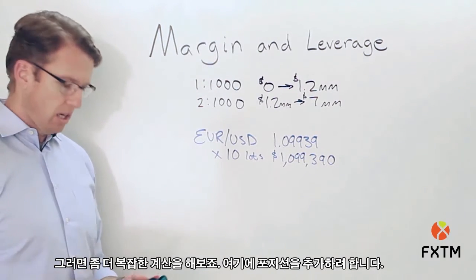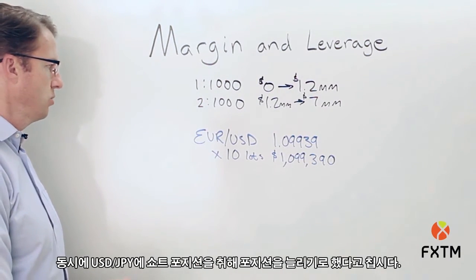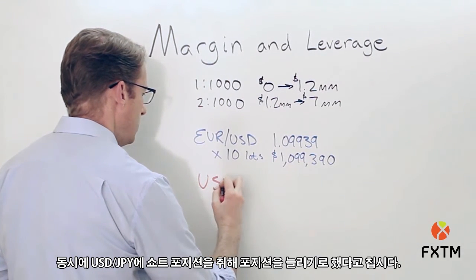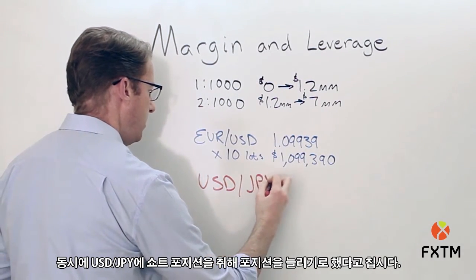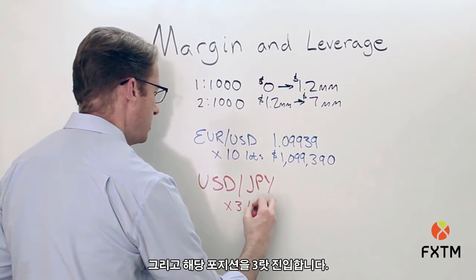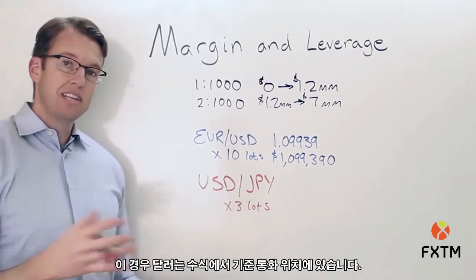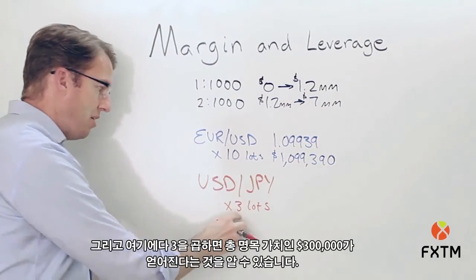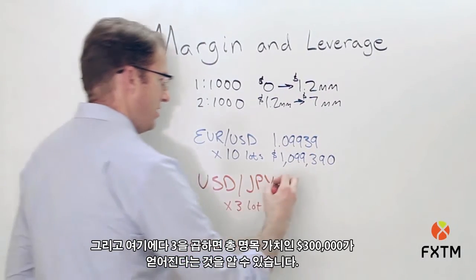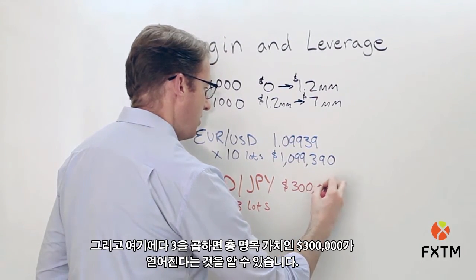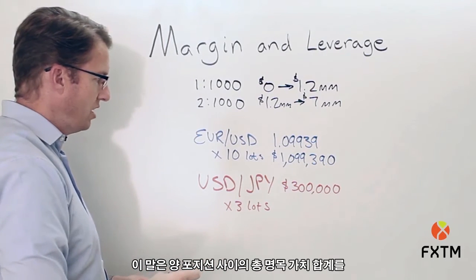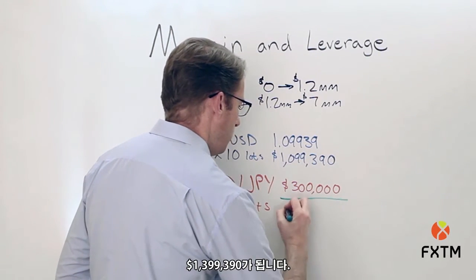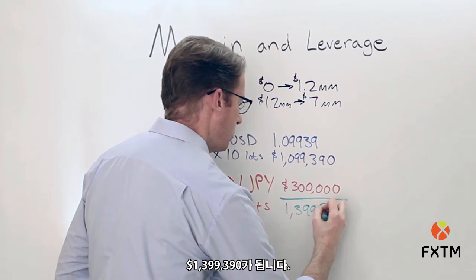Let's say the trader decides to enlarge her position by simultaneously going short the USD/JPY pair — three full-size lots. In this case the dollar is on the base side, so each lot is worth $100,000 of notional value, giving us a total outstanding notional value of $300,000 for this position. That means the combined total notional value across both positions is $1,399,390.